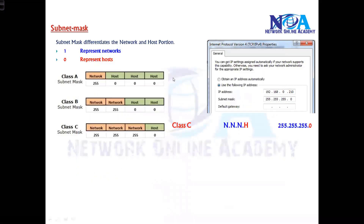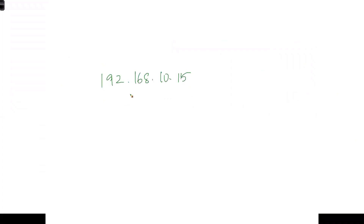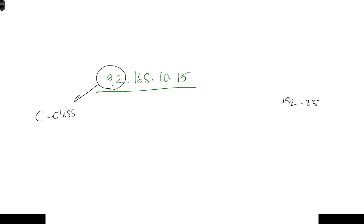Basically, subnet mask is going to differentiate the network and the host portions. When I write an IP address like 192.168.10.15 and you ask how many network portions and how many host portions — 192 comes in the range of 192 to 223, which is the C class range. In C class there are three network portions and one host portion, so the first three octets are network and the last is host.